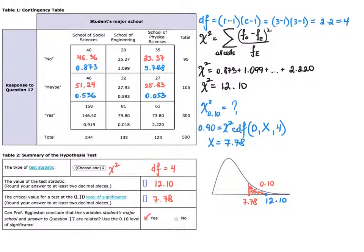Can Professor Eggleston conclude that the variables, students' major school and answer to question 17 are related? We're going to say yes, because we rejected the independence statement in the null hypothesis.